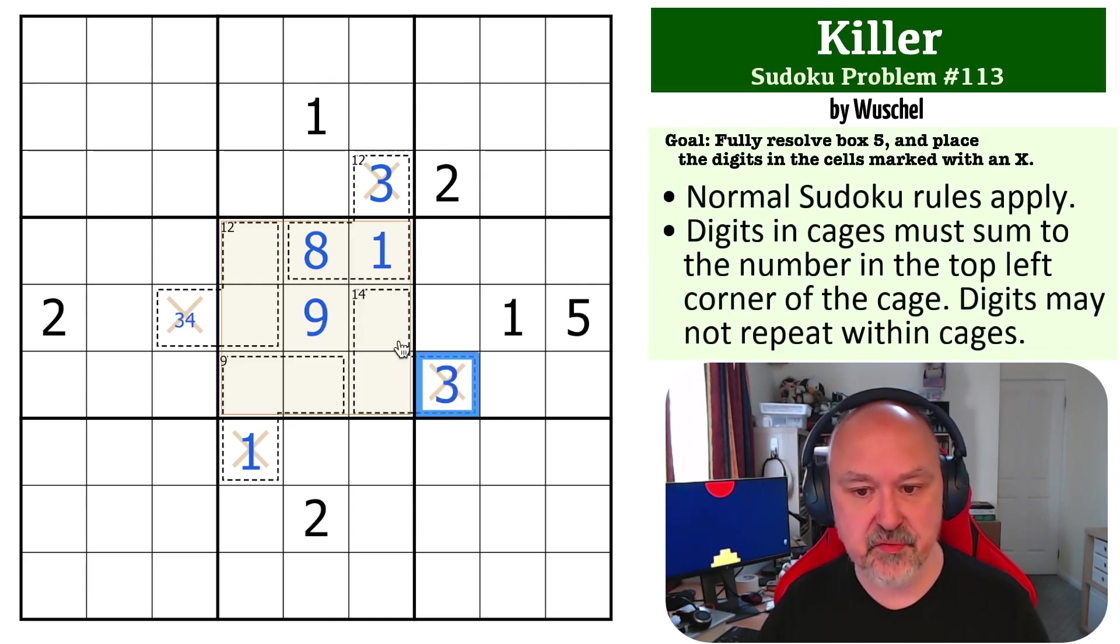So this has to be the 3. We need two threes and a four. This becomes the 4, and now we've got the totals. Now it boils down to mostly Sudoku. Where do we put 3 in this box? We can't put it in here because of the column. We can't put it in here because of the row. This becomes 3. We've got 4 and 3, which sum to 7. We need another 5. This is a 3-5 pair. This 5 means that this is the 3 and this is the 5.